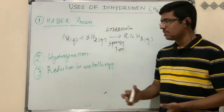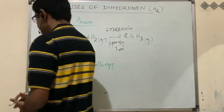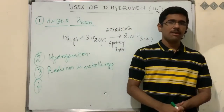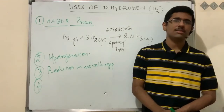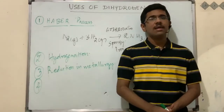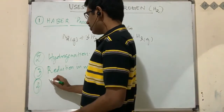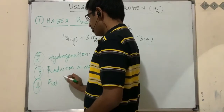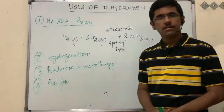The fourth use of hydrogen gas is to launch space vehicles. Rockets and many other spacecraft can be launched using hydrogen gas because hydrogen gas is highly inflammable, making it an effective rocket launching fuel.